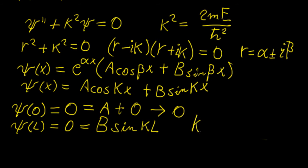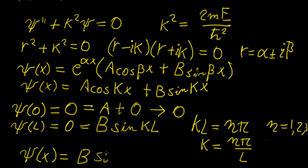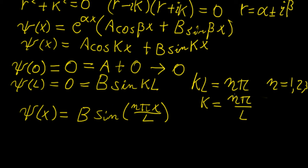We have two options: B = 0, which gives a trivial useless solution, or kL equal to integer multiples of π — so kL = nπ for n = 1, 2, 3, … — because sine vanishes at integer multiples of π. Rearranging, k = nπ/L. Our general solution is then ψ = B sin(nπx/L).